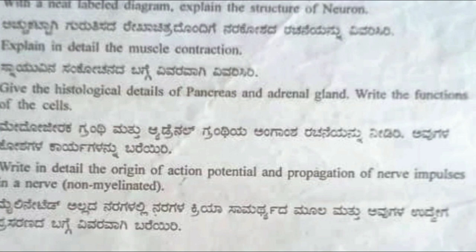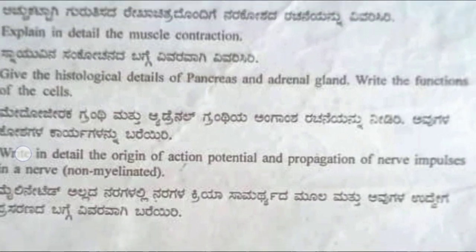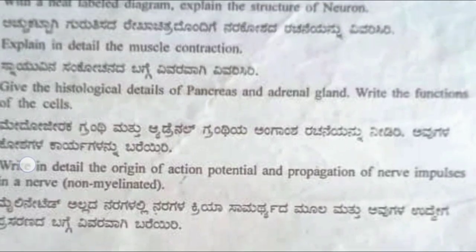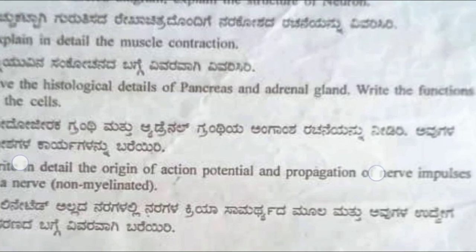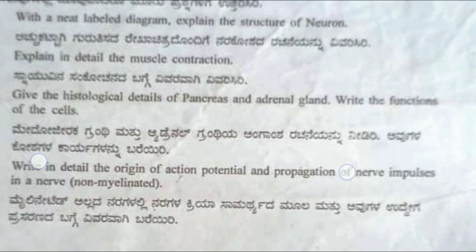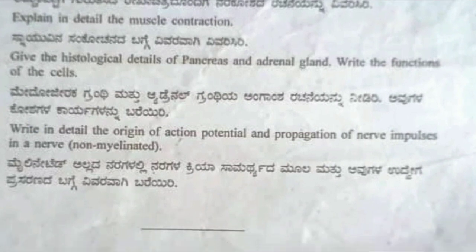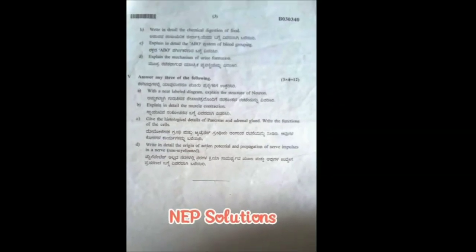The next question: give the histological details of pancreas and adrenal gland, and write the functions of the cells. You have to give the histology of both pancreas and adrenal gland and write the functions of the cells. The last question: write in detail the origin of action potential and propagation of nerve impulse in a nerve.